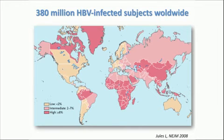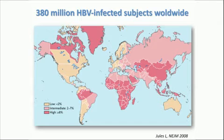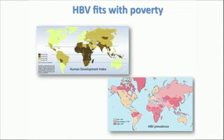As you know, almost 400 million people are infected with viral hepatitis B worldwide. And as you can see, the majority of high endemic countries are in Africa and in Southeast Asia. If we come back to the first map on poverty, you can see that viral hepatitis B fits perfectly with underdevelopment and poverty.